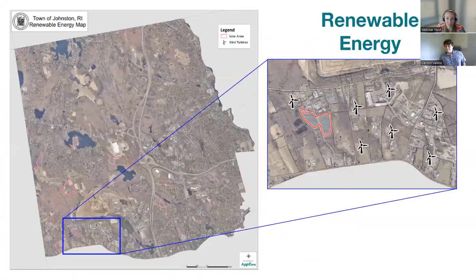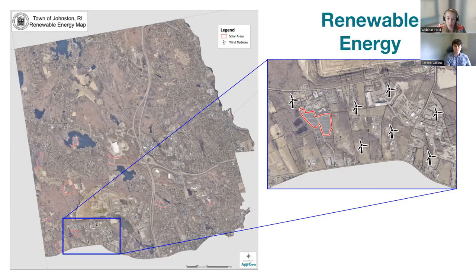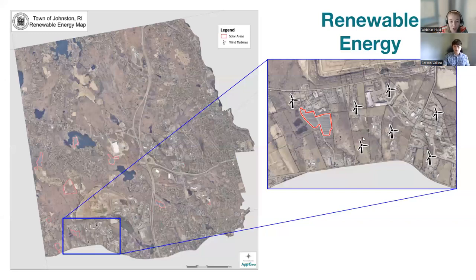The next map we created is for Johnston, Rhode Island, showing their solar areas and wind turbines in town. Looking at the map on the left, you can see a cluster of solar areas just south of the main roads, and wind turbines in the very southern section. In the enlarged photo, you can actually see the shadow of a wind turbine on the ortho imagery, which is pretty cool.